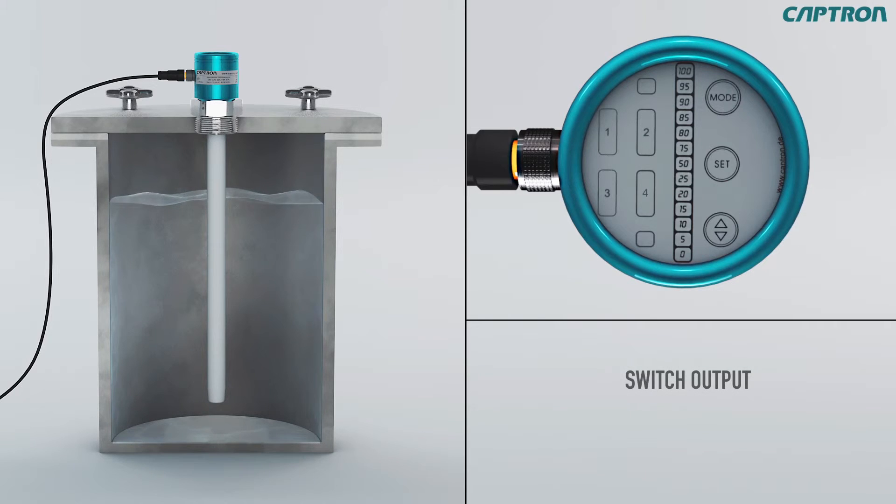Setting the switch output PNP1. The 0 and 100% displays will light up once again, as well as the NO or NC display for PNP1. NO stands for normally open and NC for normally closed contact. You can set NO or NC with the up-down button. Confirm your adjustment with set.